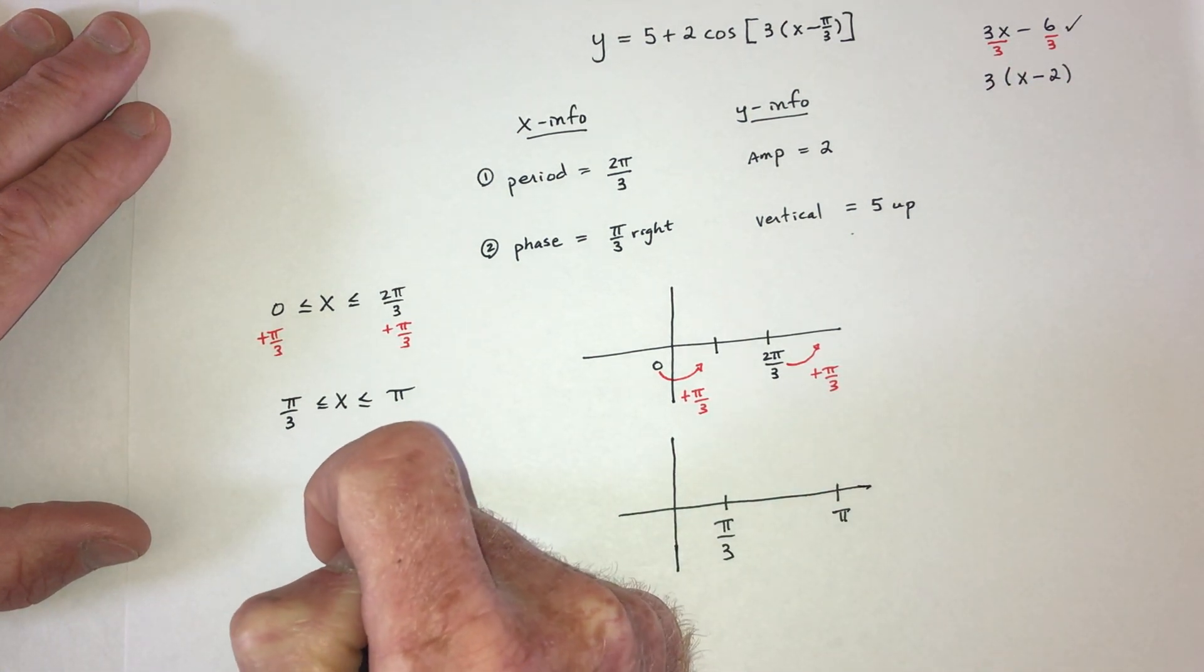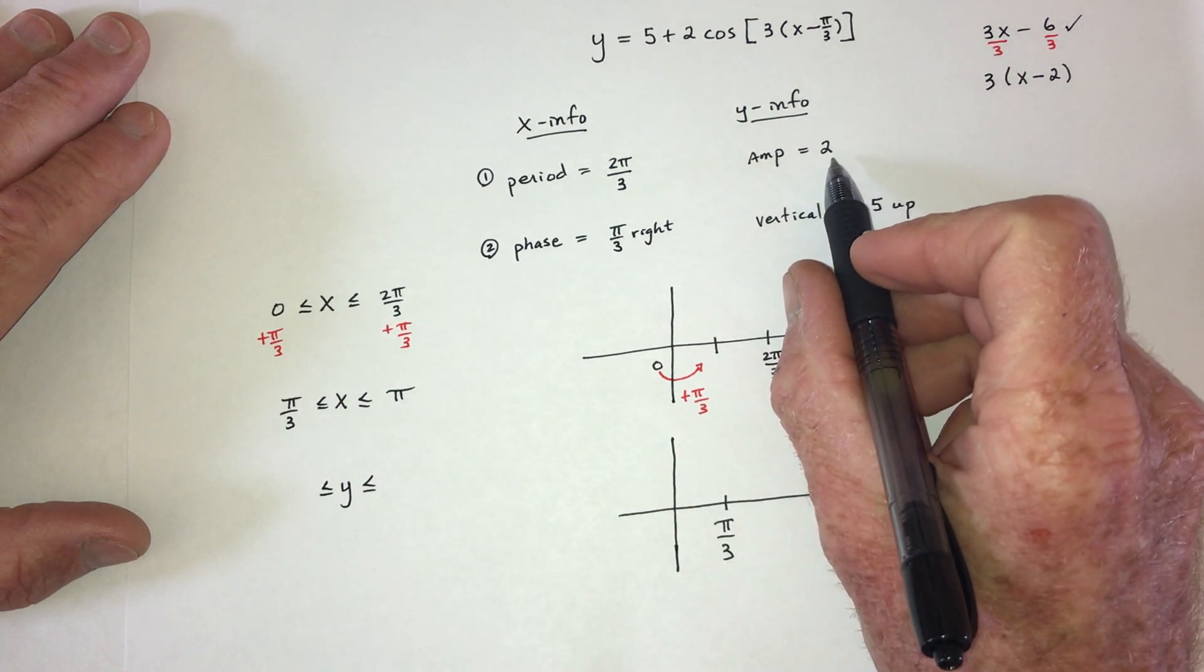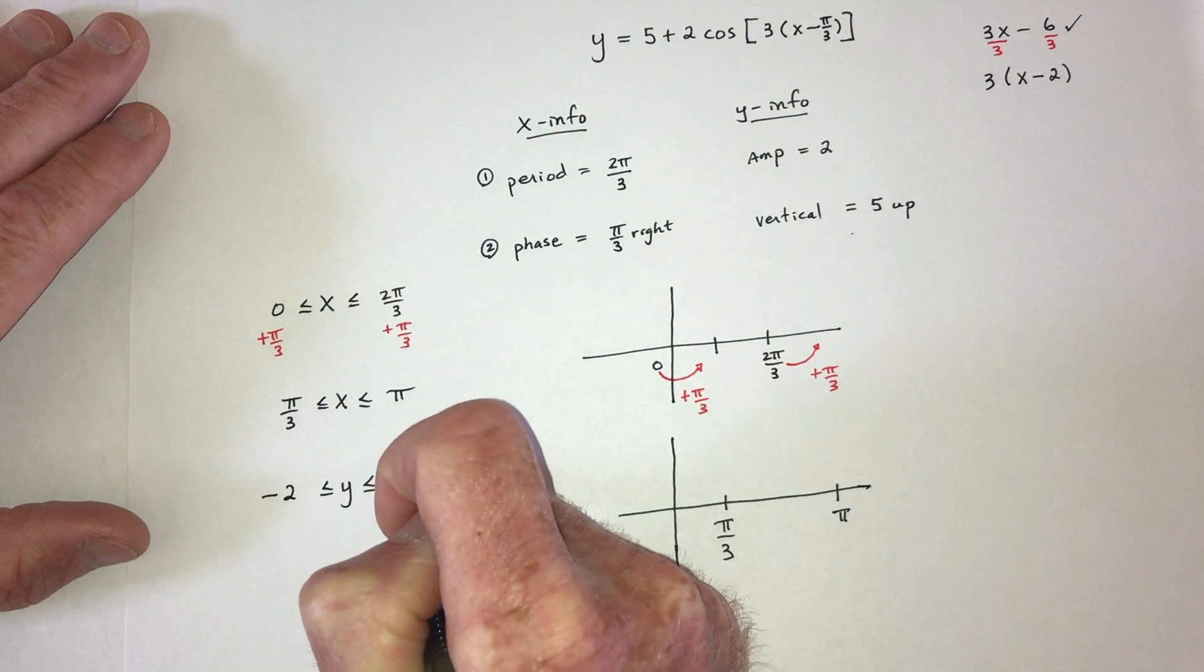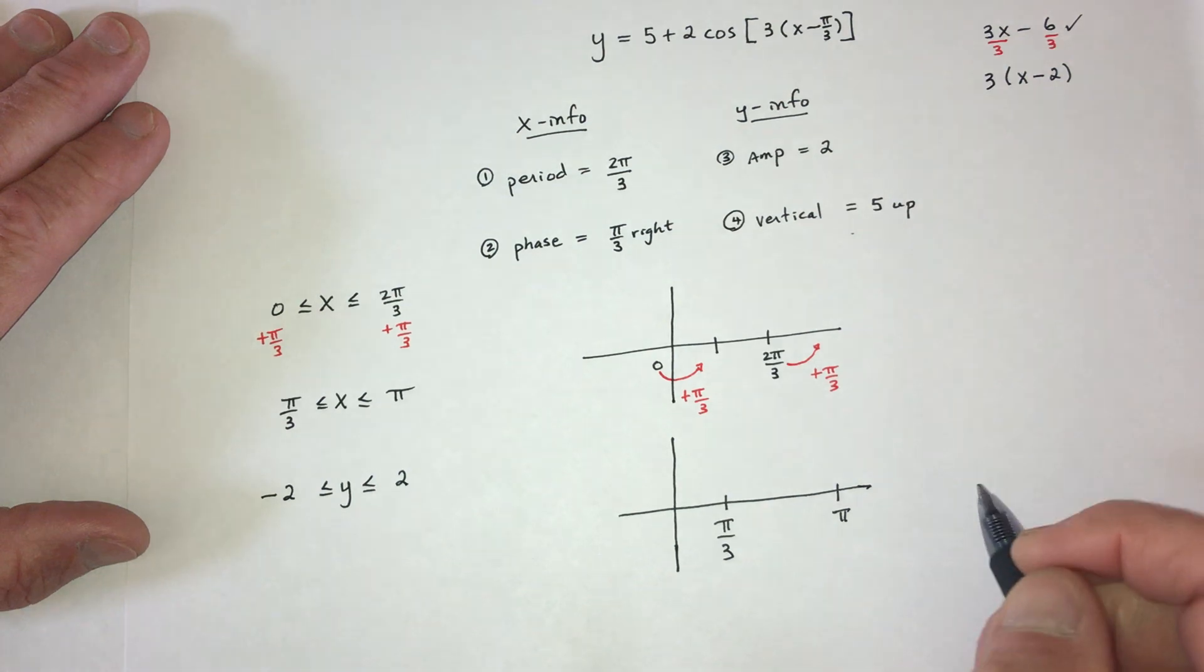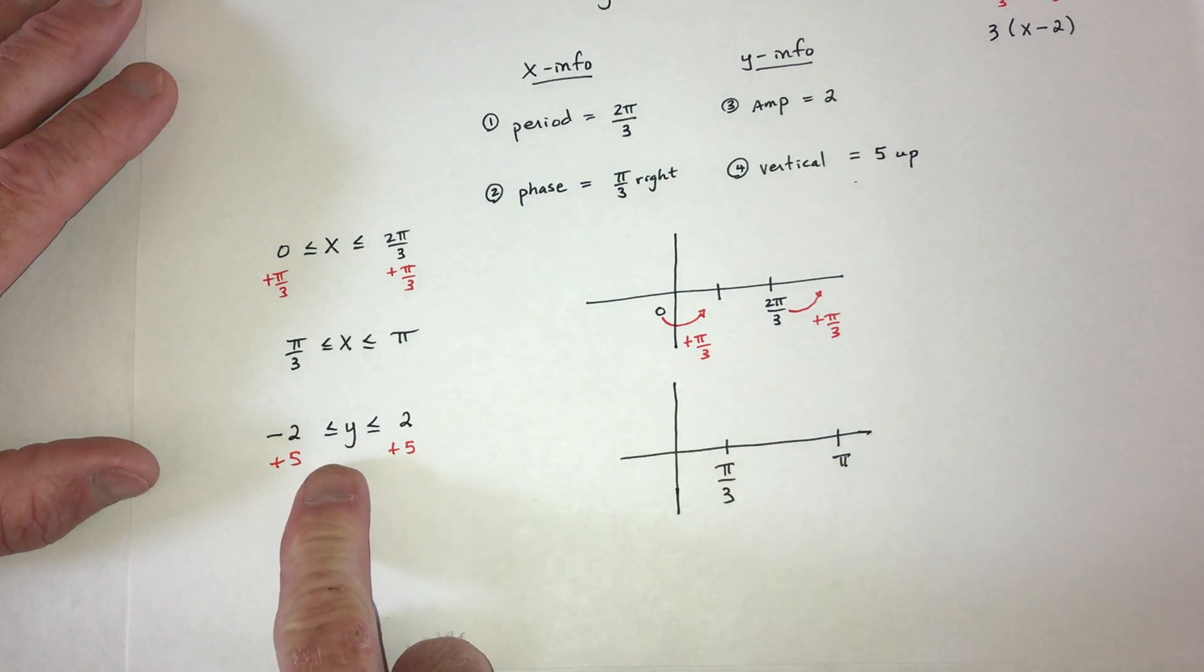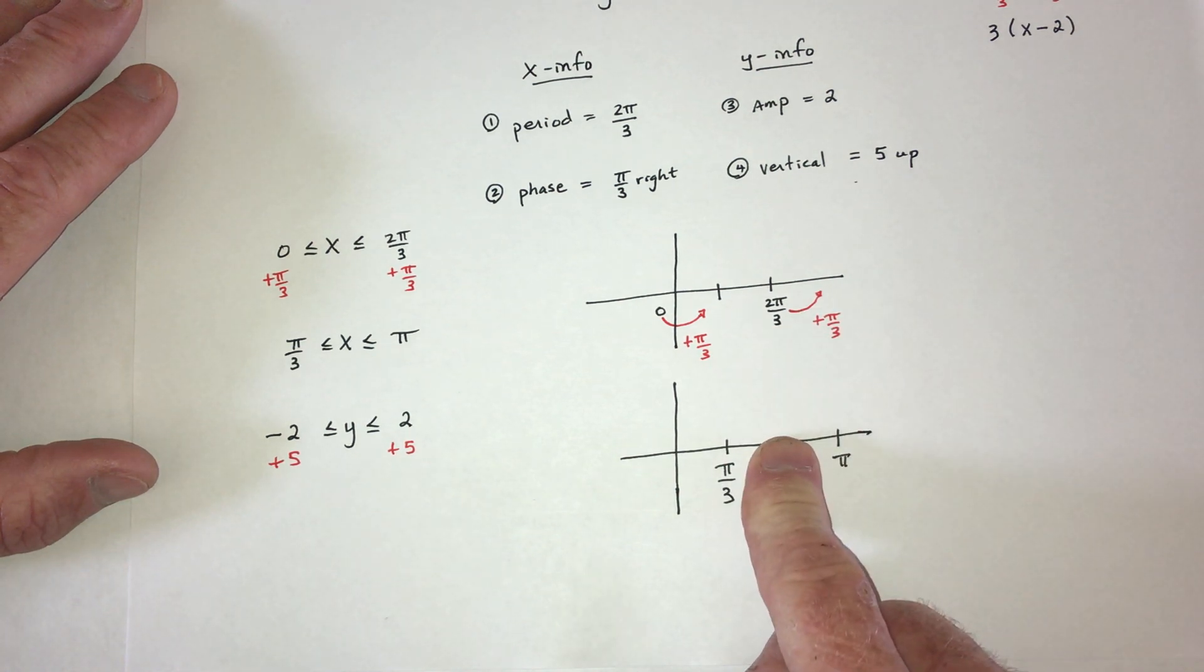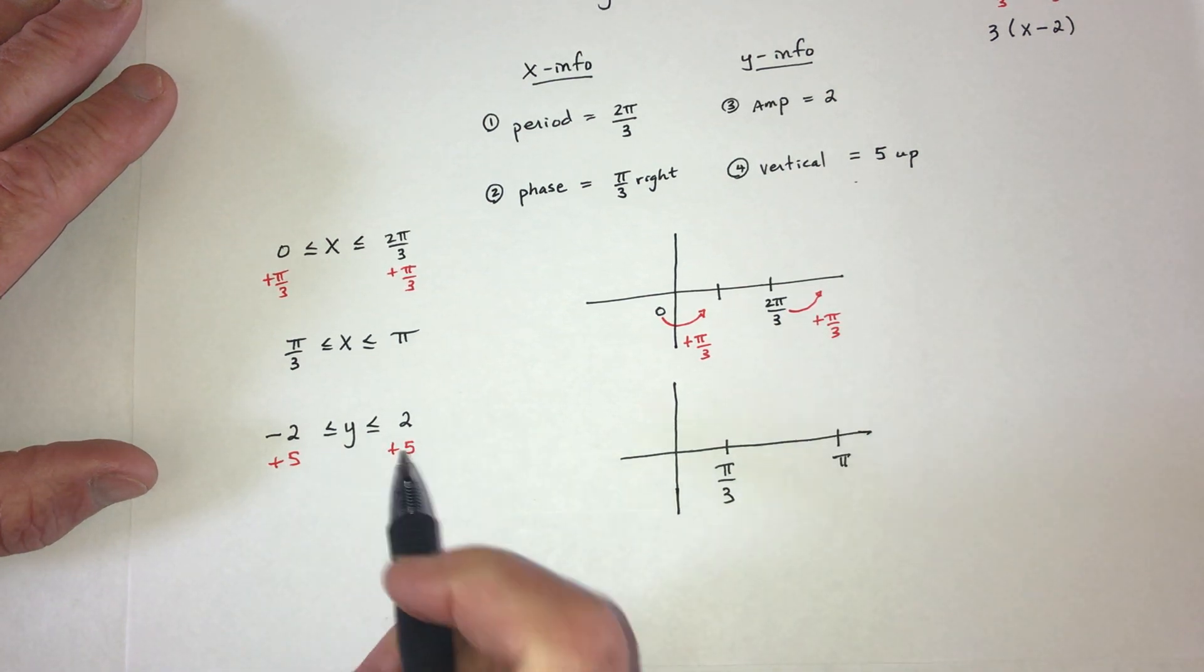Then for the y-axis information. So you could say the y's, because the amplitude is 2, that means it's going to go up to 2 and down to negative 2. So ranges between negative 2 and positive 2 from the amplitude. The vertical shift means go up by 5. So add 5 and add 5.